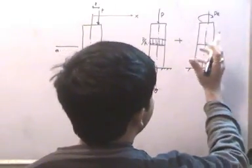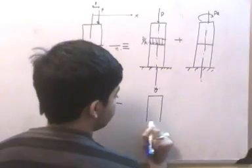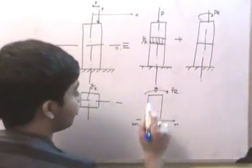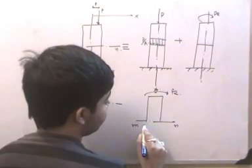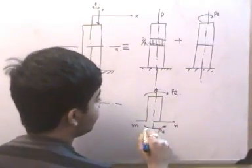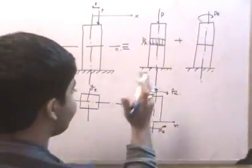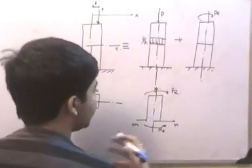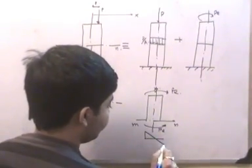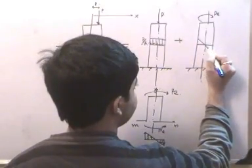There will also be a bending stress at this cross section due to the moment P times e. Drawing the free body diagram, at section MN I apply a clockwise moment; to balance this there will be an internal moment, which is essentially the bending moment. This bending moment creates a hogging effect such that the fibers on the left side of the y-axis are subjected to tension and those on the right side are subjected to compression.